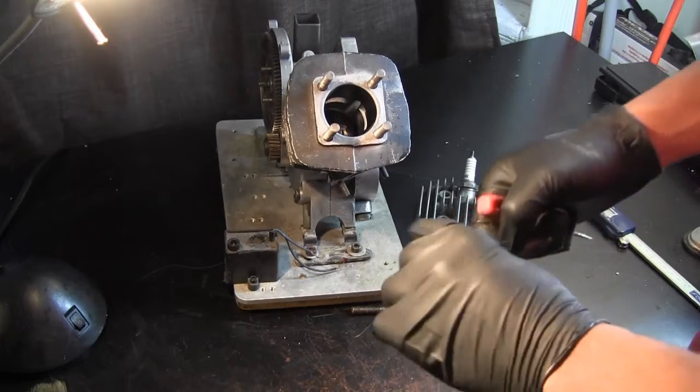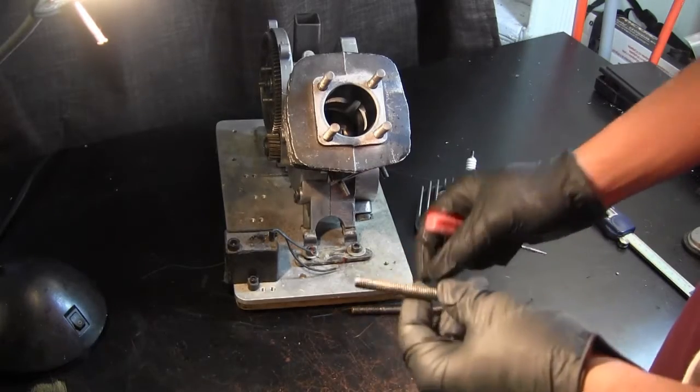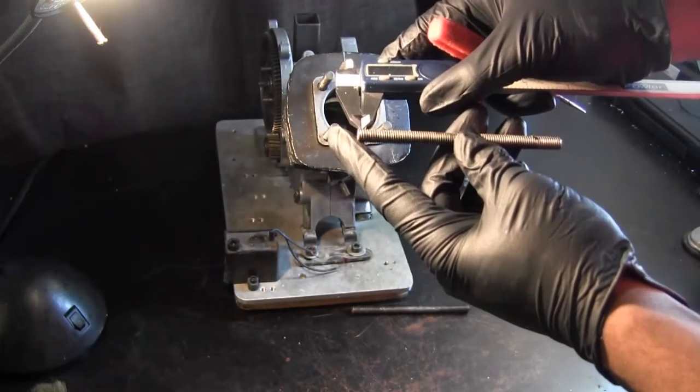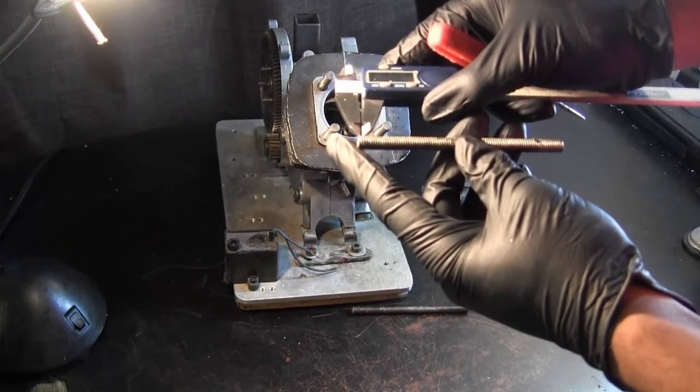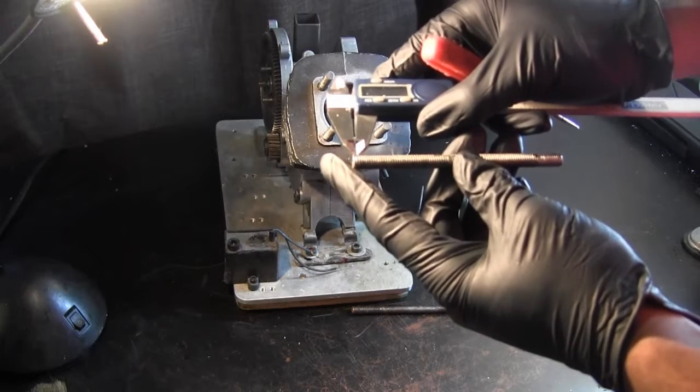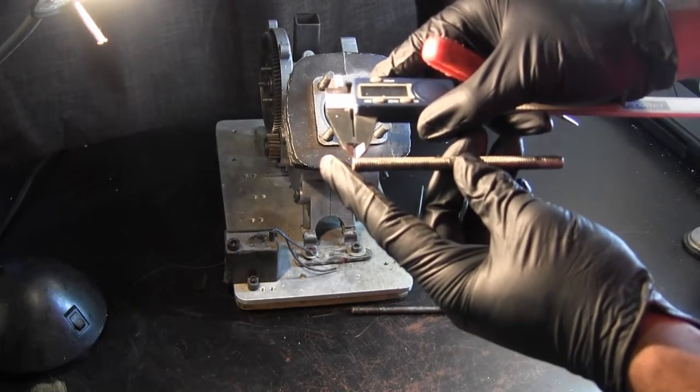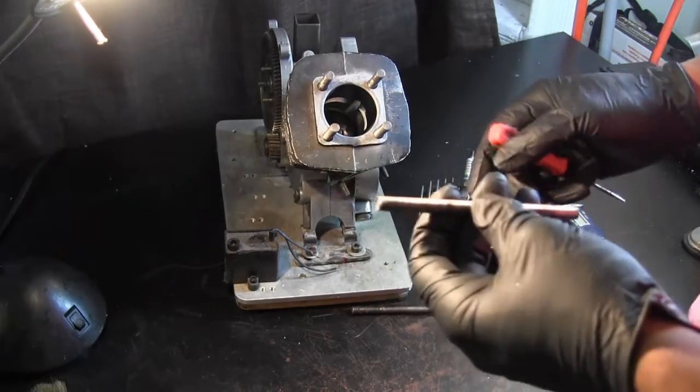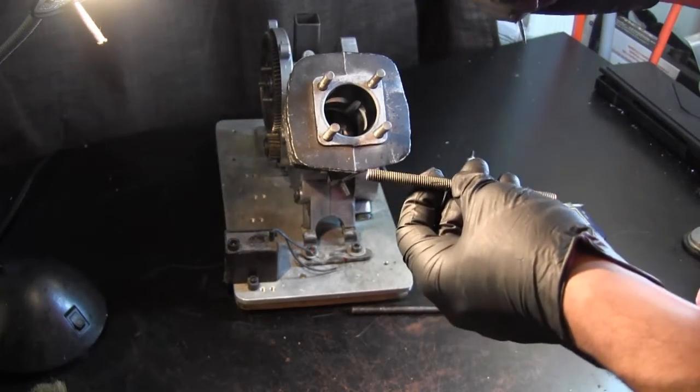So your best bet is to use a caliper or some kind of fine ruler, metric of course. You just want to measure the distance between these two threads. If it's over one millimeter, then you automatically know that you're going to opt for the 1.25 millimeter pitch.